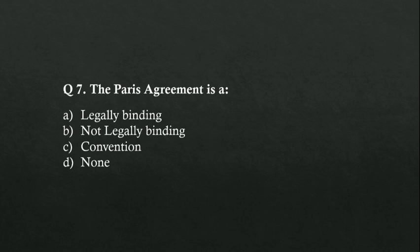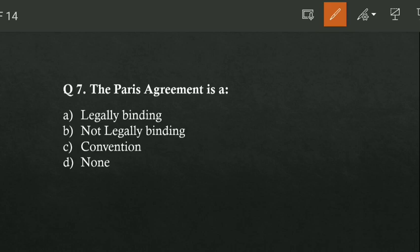Next, the Paris Agreement is: option A legally binding, option B not legally binding, option C it's a convention, or option D none. It is a legally binding agreement.